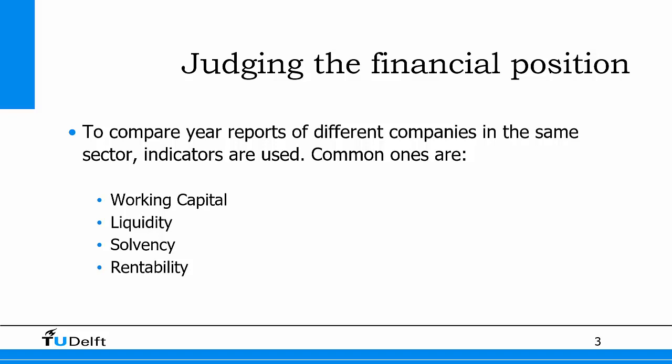Basically the indicators can be divided into four groups: the working capital, the liquidity, the solvency, and the rentability.